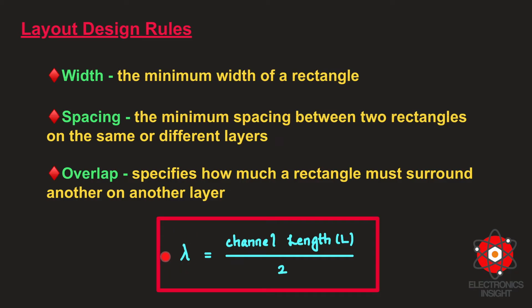Universities use scalable design rules, which are completely based on a single parameter called lambda. Therefore, we also define the layout design rules as lambda-based design rules. In a lambda-based design, lambda is defined as channel length divided by 2, where channel length is usually denoted by capital L — which means channel length equals twice lambda. All dimensions are expressed in terms of lambda. The advantage is that any existing layout can be reused for a new purpose by simply changing the lambda value. For example, in a 360 nanometer process with a minimum polysilicon width of 0.36 micrometers, lambda will be 0.18 micrometers.